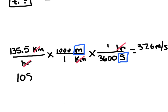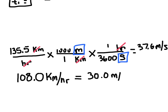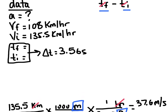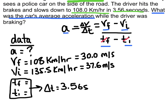Converting the other velocity: 108 kilometers per hour works out to 30 meters per second. Now I can plug these values into the equation. My final velocity is 30 meters per second, my initial velocity is 37.5 meters per second, and I've made sure all data is in SI units. Let's plug everything into the equation.